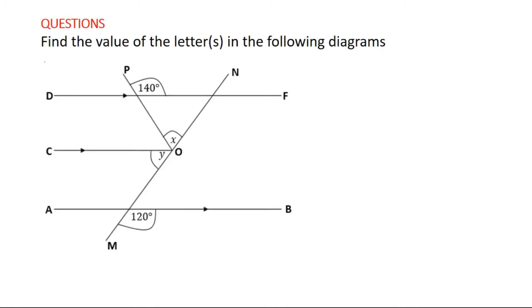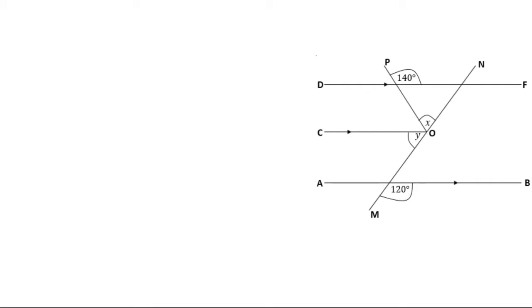We are being told that we have to find the value of the letters in the following diagrams. In this first diagram, you are going to find the value of X and Y. We have parallel lines and transversals, so we can use co-interior, alternating, or corresponding angles — any of the three properties that we learnt.